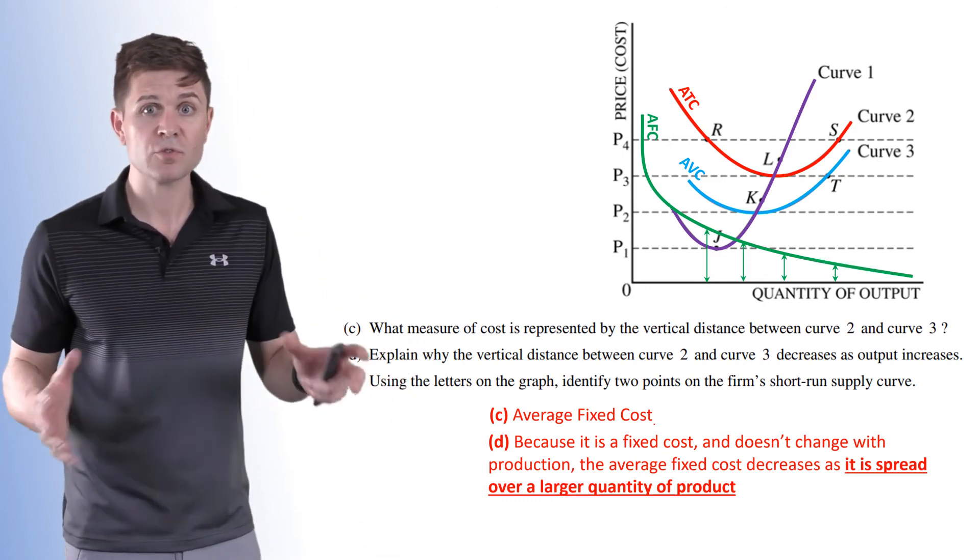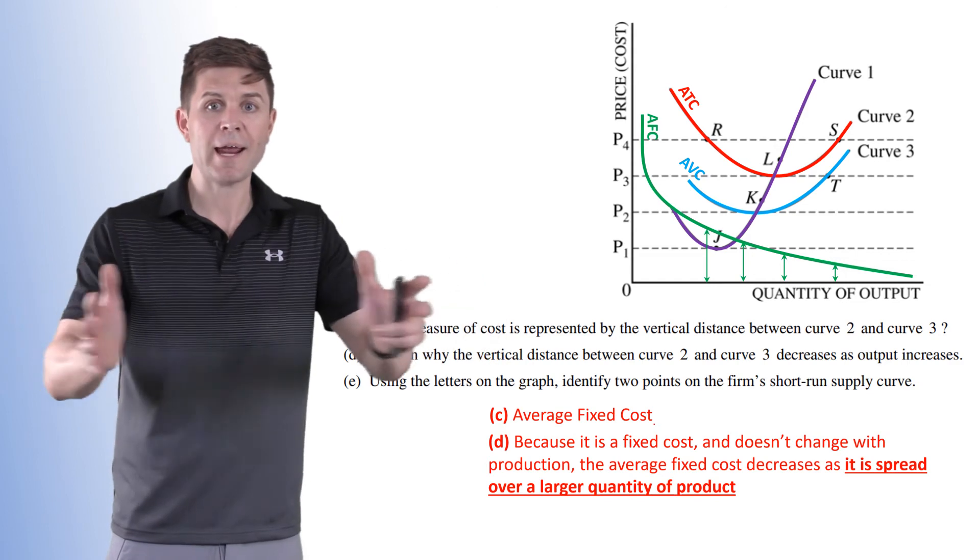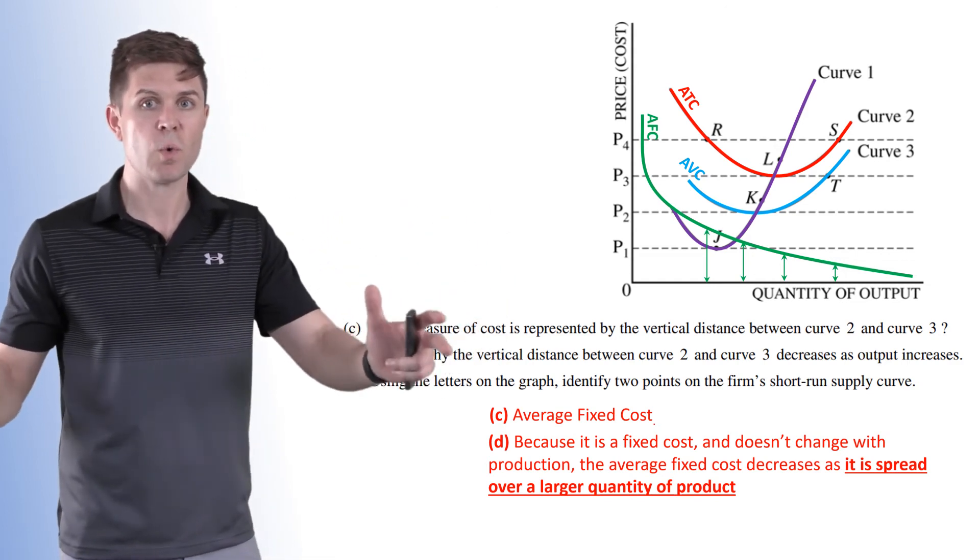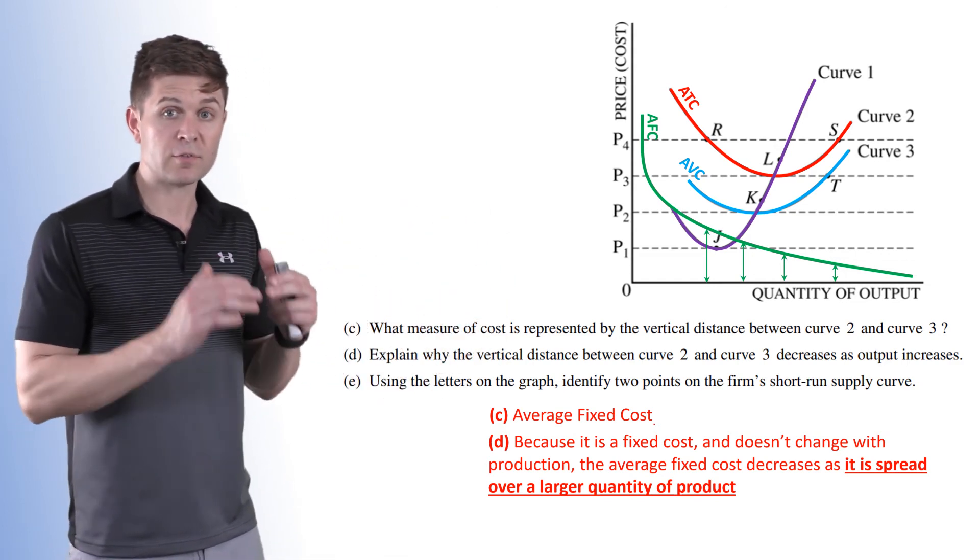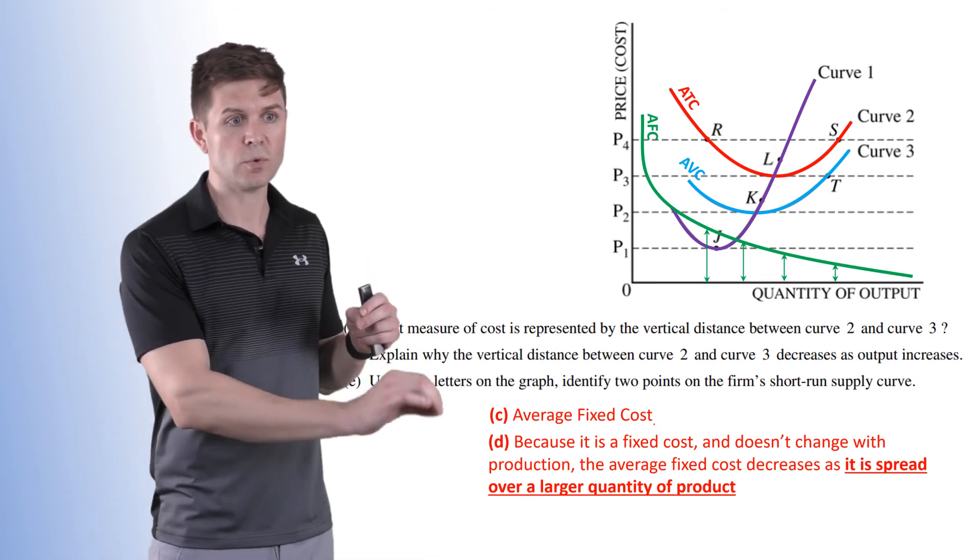When we have a fixed cost, the more we produce, the more that average is spread over a larger quantity. Average fixed cost, as long as production is increasing, continues to go down.